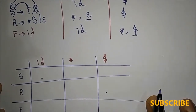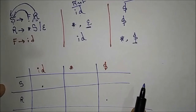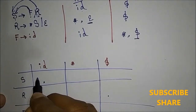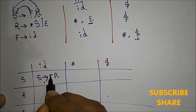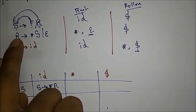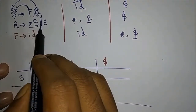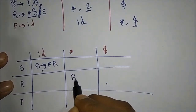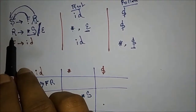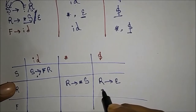Now we fill up the parsing table. For S → F R: FIRST(S) = FIRST(F) = {ID}, so we place this production in M[S, ID]. For R → *S: FIRST(R) includes asterisk, so this production goes in M[R, *]. For R → ε: since epsilon is in FIRST(R), we use FOLLOW(R) = {$}, so R → ε is placed in M[R, $].